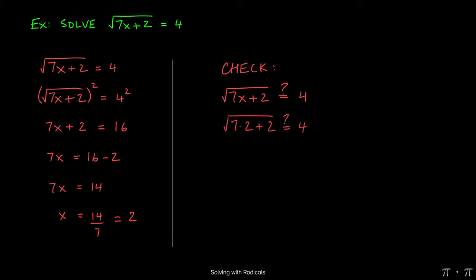So square root of 7 times 2 plus 2 is equal to 4. That's a question that we have to answer. 7 times 2 will give us 14. 14 plus 2 on the inside of the radical yields a 16.